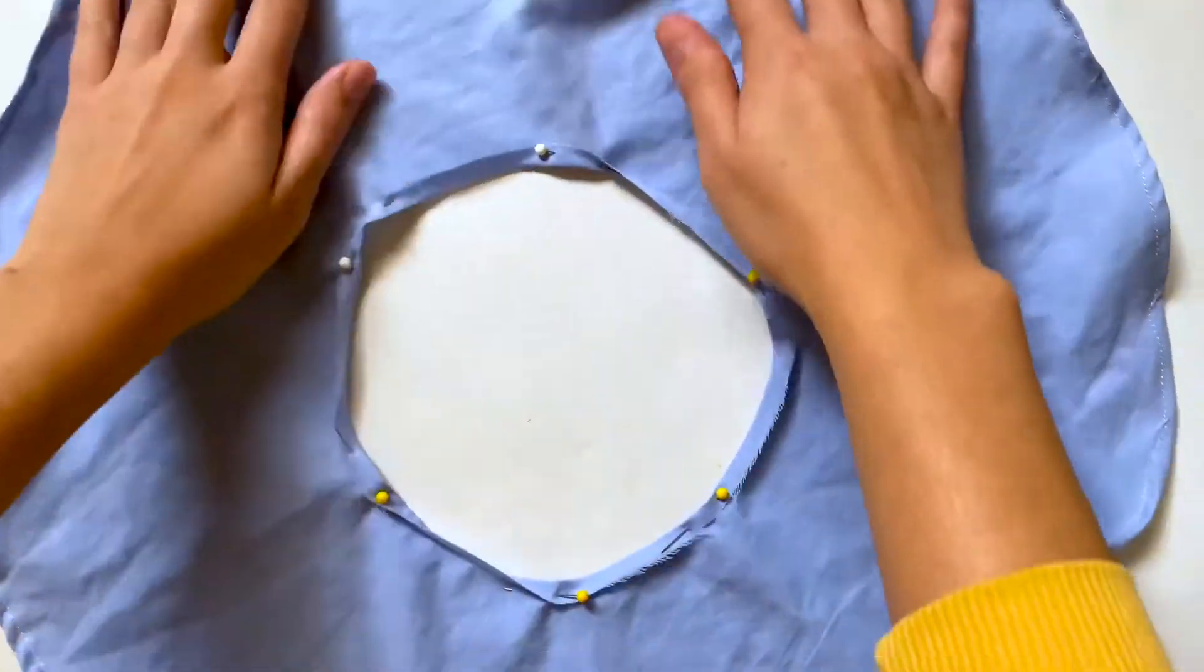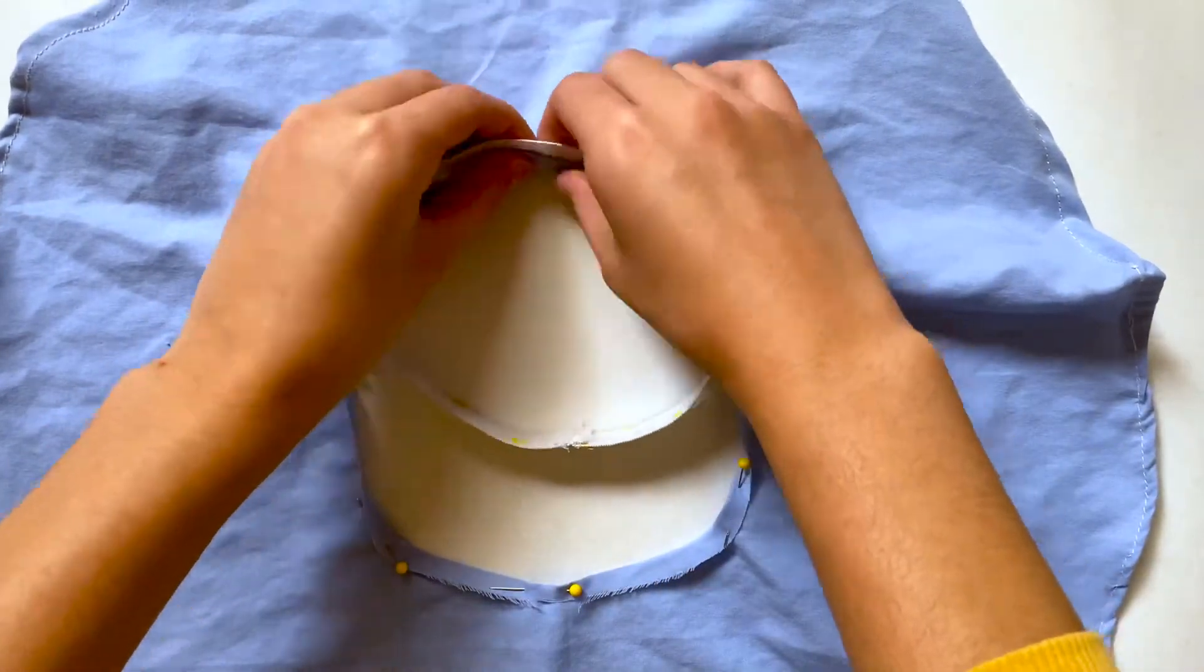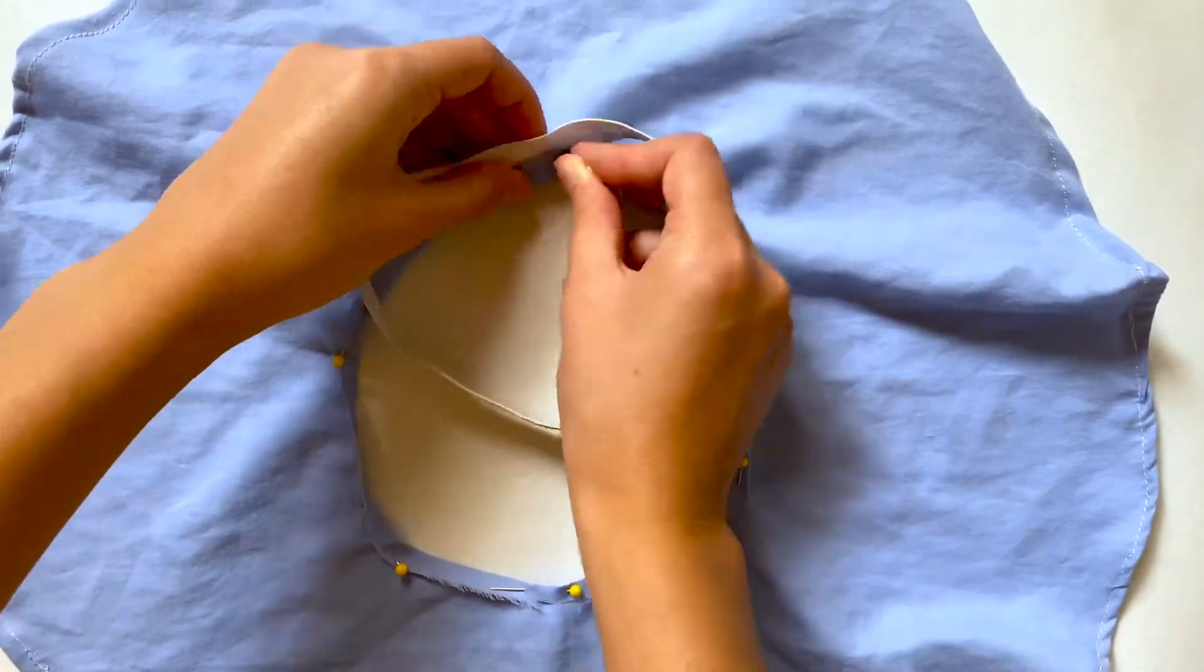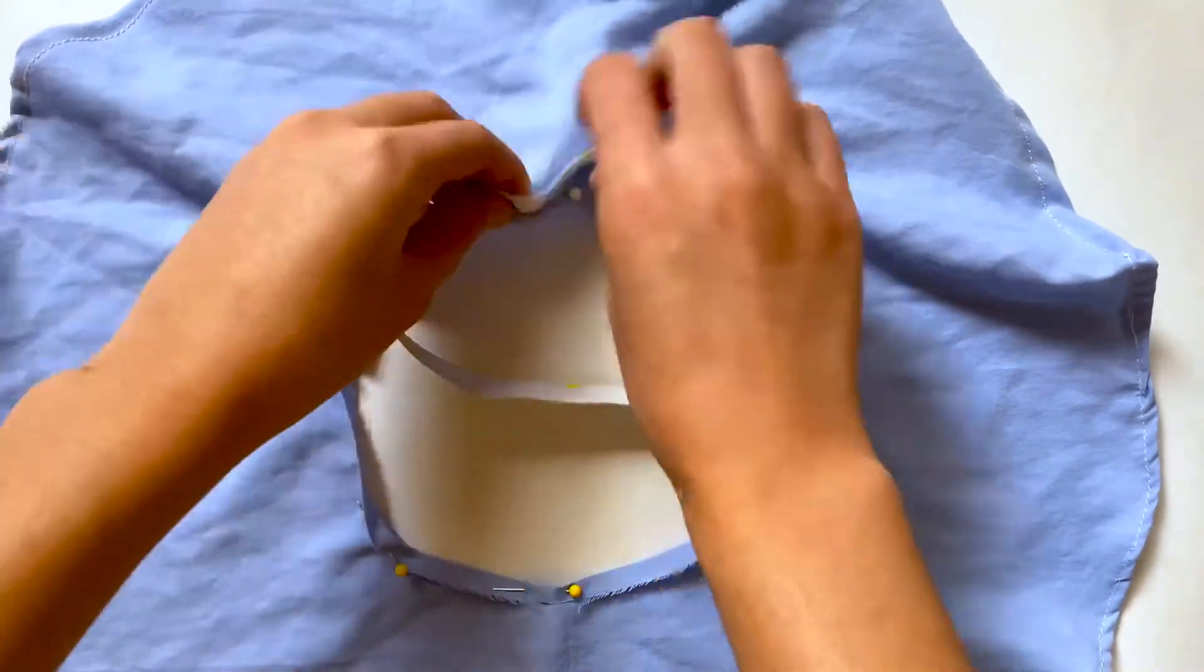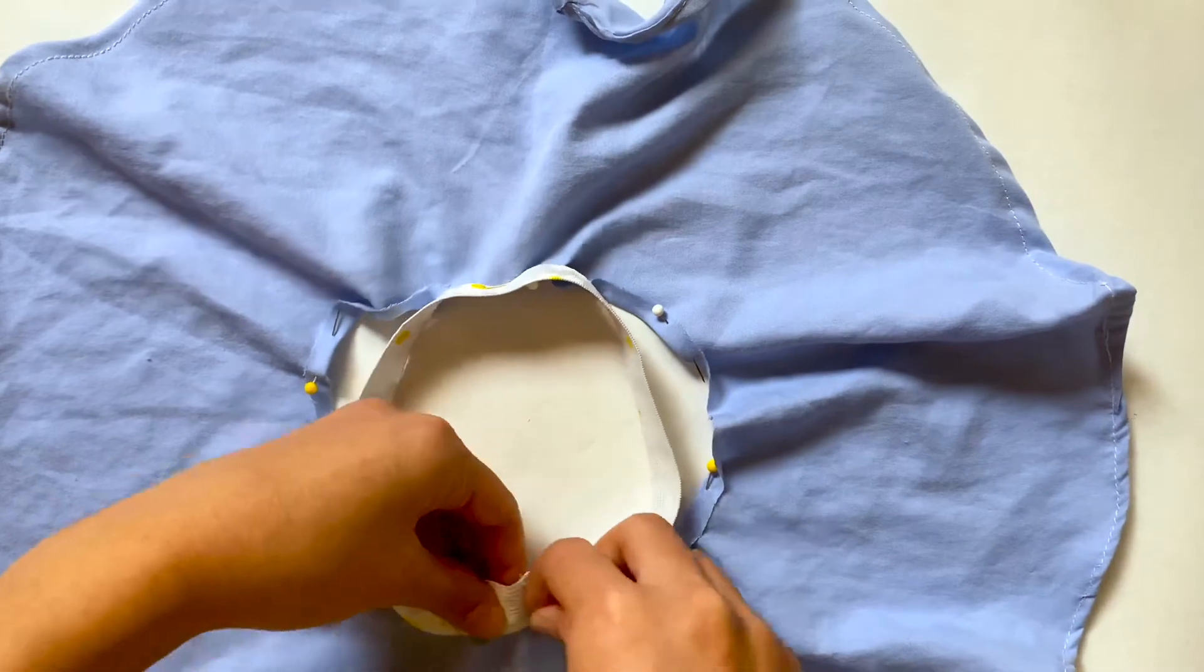Now I'm going to grab my waistband and lay the bottom edge of the waistband on top of that folded edge we just did. And then I'm going to do the same thing to the opposite side. I'm going to do this in four places, and then I'm going to do a straight stitch right along the edge we just pinned down.